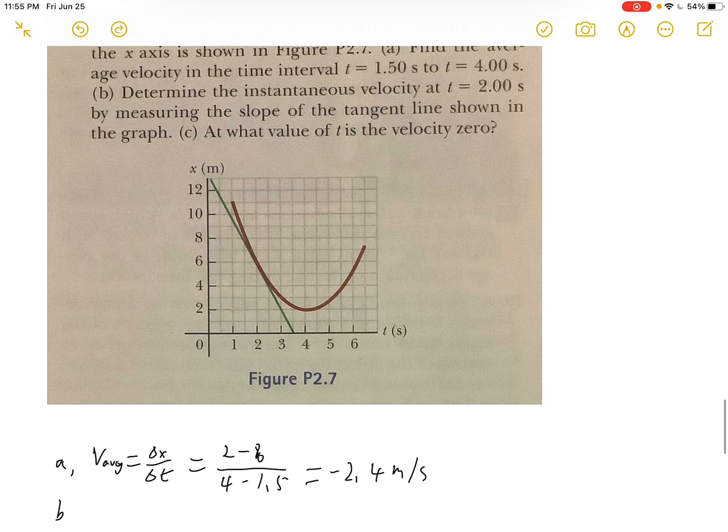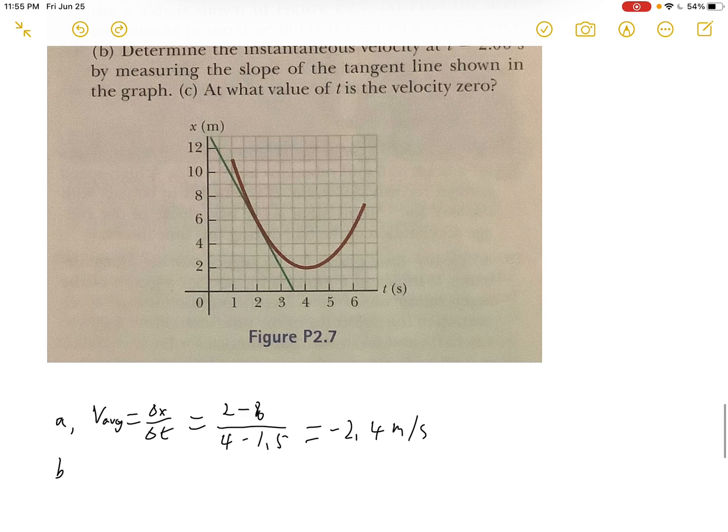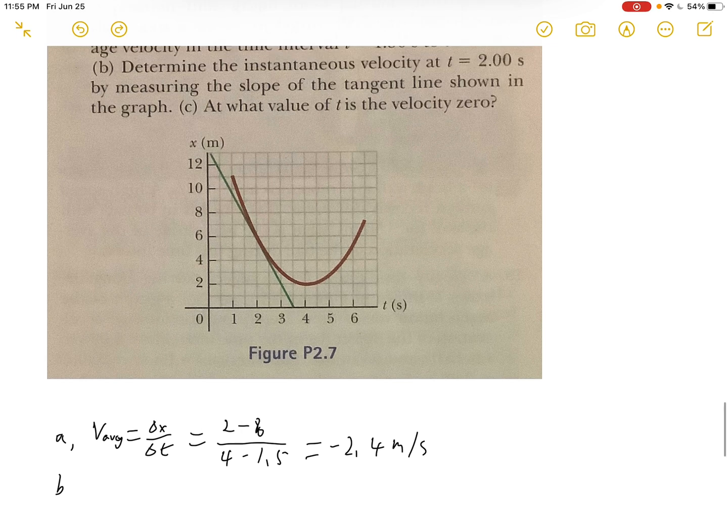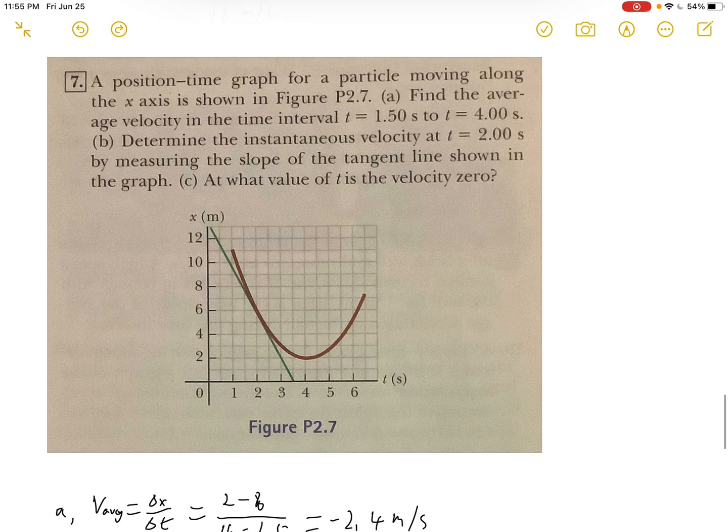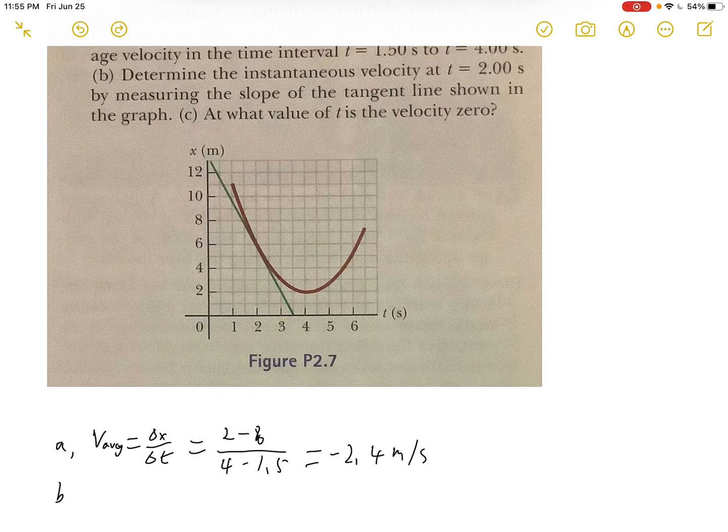For part b, we need to find the instantaneous velocity by measuring the slope of the tangent line shown in the graph. The slope is rise over run. Because we have a position-time graph, it will be delta x over delta t.